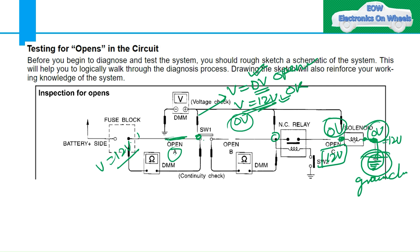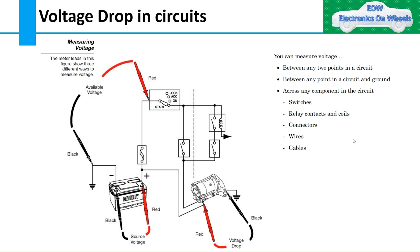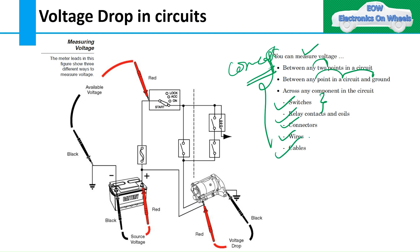If you have any confusion about how to check open circuits using voltage or resistance methods, please comment in the comment box. In a few days we will have a practical session showing how 12 volts and zero volts appear in these conditions. Remember this important concept: you can measure voltage drop between any two points in a circuit and ground, and also across components like switches, relays, connectors, wires, and cables.